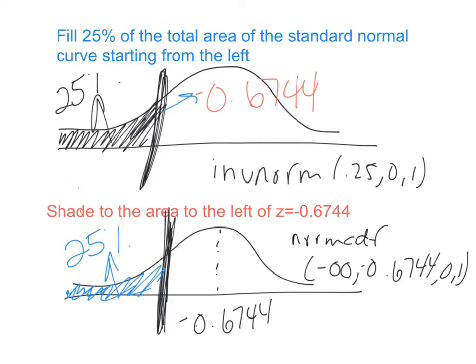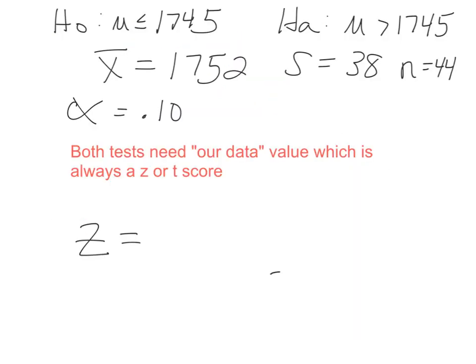To combine all of that into one example: the null hypothesis says the average is less than or equal to 1745, and the alternate hypothesis says the average is bigger than 1745. A sample of size 44 gave a sample average of 1752 with a standard deviation of 3.8. We're testing at a significance level of 0.10.